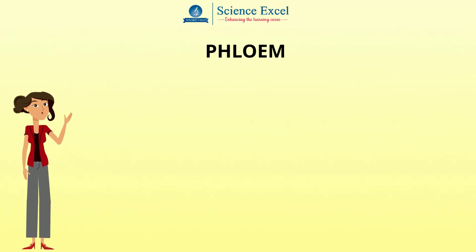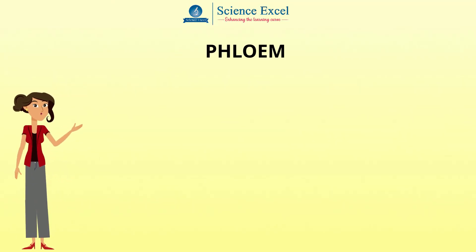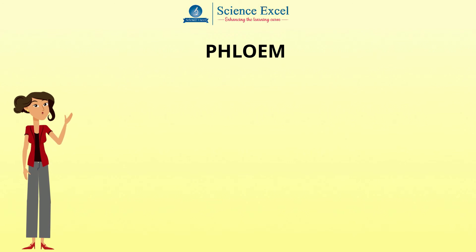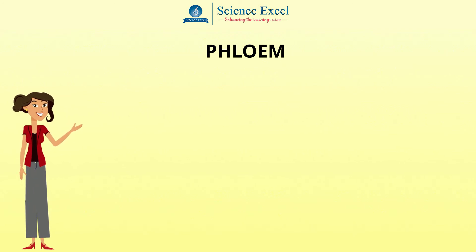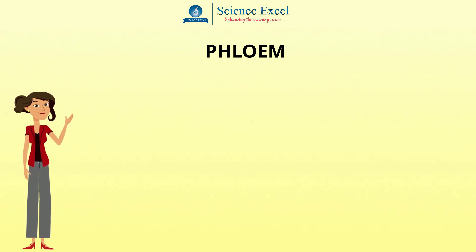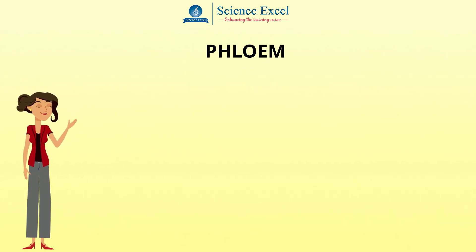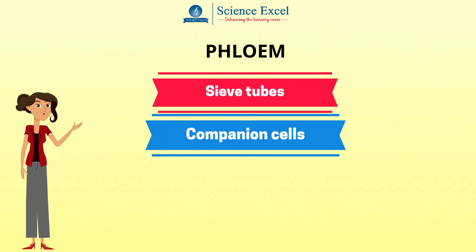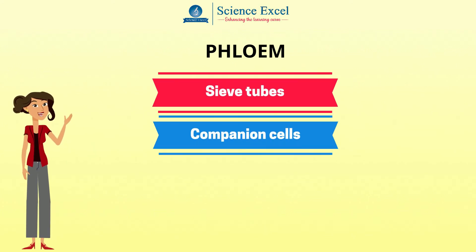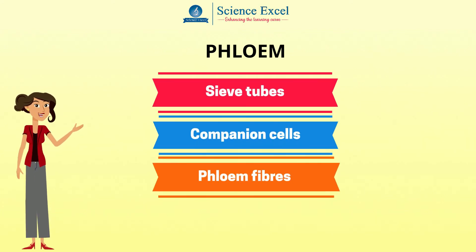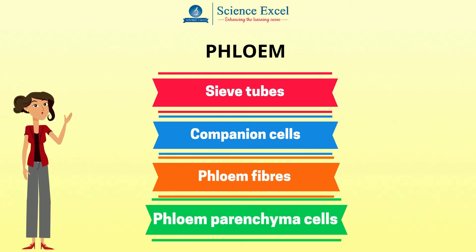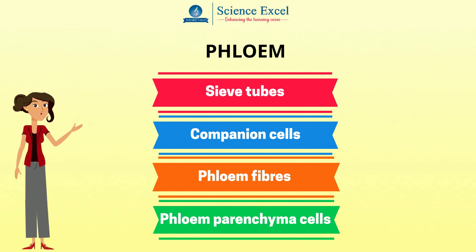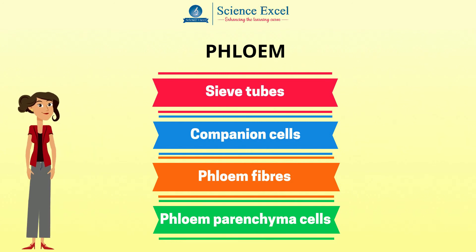Now what is phloem made up of? Phloem is formed of various specialized cells called sieve tubes, companion cells, phloem fibers and phloem parenchyma cells.